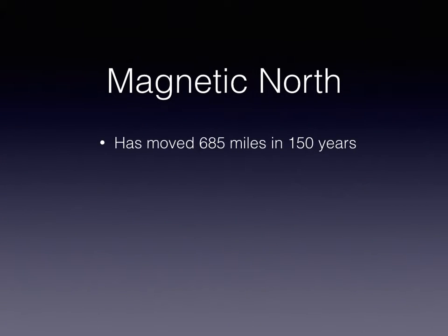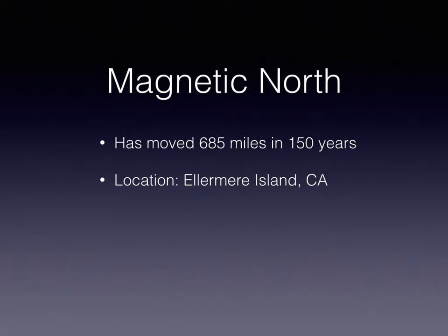So where is magnetic north? Well, to begin with, it moves. It's moved 685 miles in 150 years, so data about where it is has to be updated somewhat periodically. Currently, it's located in Ellesmere Island, Canada. Here are the coordinates. And it's moving towards Russia.